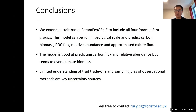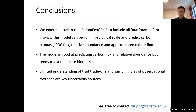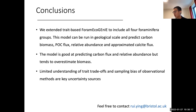In conclusion, we extend the trait-based foraminifera model and extend it with more functional groups of foraminifera. We can run this model at geological timescales and predict carbon biomass, POC flux, relative abundance, and approximate calcite flux. We have higher confidence for the carbon flux and relative abundance, but lower confidence in the biomass. We also learned that we still have very limited understanding of foraminifera trait trade-offs because we have very limited observational and experimental studies of foraminifera. Observational methods also create some uncertainty in this study. Please give any comments and questions — thank you.